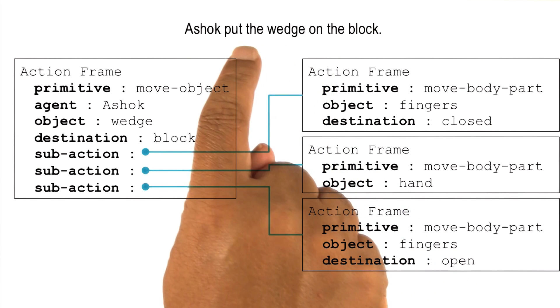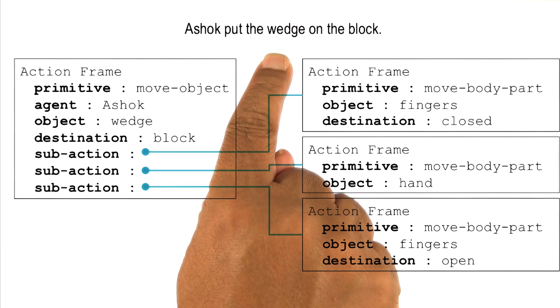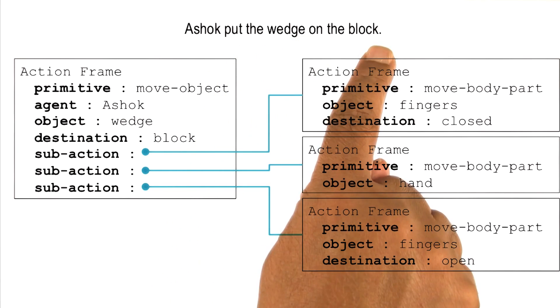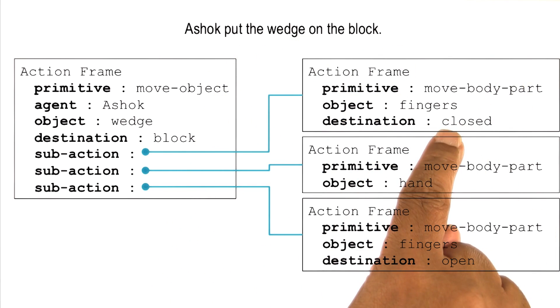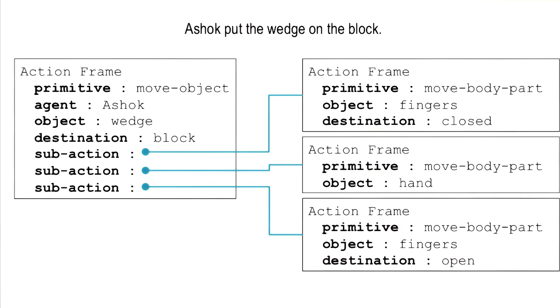Which says that when actions get done and things get moved from one place to another place, then typically fingers are first closed around the first object, then the hand moves, and the fingers are released around the second object.